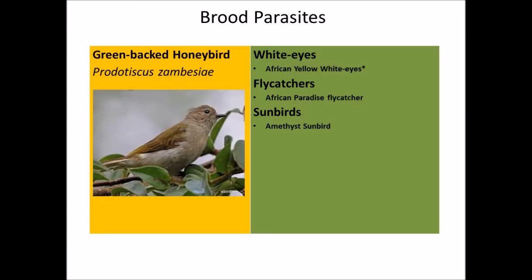The Green-backed Honeybird has completely different hosts, which is contrary to what one might expect for a bird related to the Brown-backed Honeybird. The reason is they have a very different distribution, and some host species may not be found where the one bird is. Hosts include the African yellow white-eye, the African paradise flycatcher, and the amethyst sunbird. Note that all of these nests are very small.